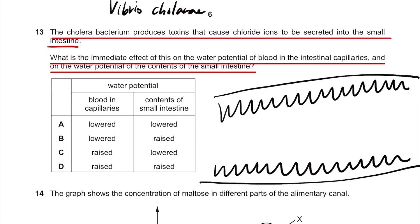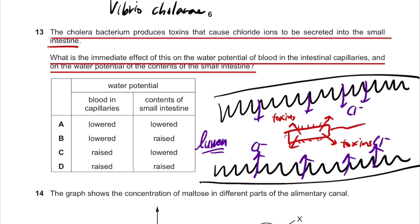However, this bacterium produces toxins. When there's presence of bacterium called Vibrio cholerae, it produces toxins. These toxins cause the chloride ions to go into the lumen of the small intestine. So lumen means space. So the chloride ions goes into the lumen,